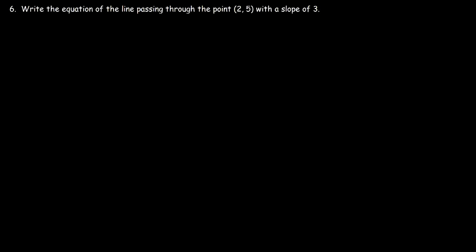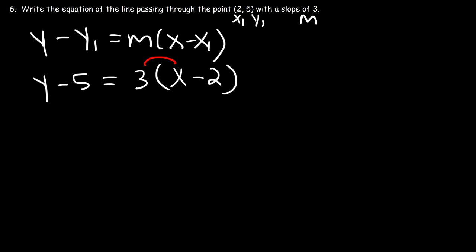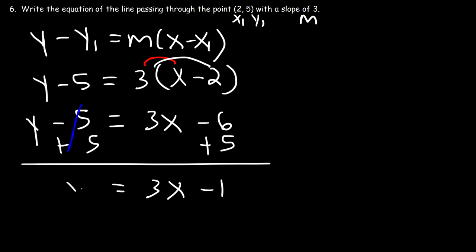Number six: write the equation of the line passing through the point (2, 5) with a slope of 3. When given a point and a slope, use the point-slope formula. With x1 = 2, y1 = 5, and m = 3, we get y minus 5 equals 3 times (x minus 2). To convert to slope-intercept form, distribute the 3: y minus 5 equals 3x minus 6. Adding 5 to both sides gives y equals 3x minus 1.